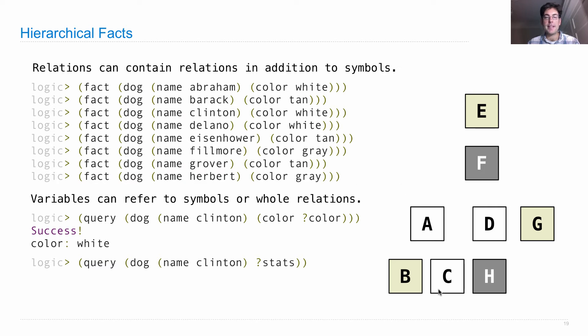So it says, yes, I know something about a Clinton. And this entire query will be satisfied as long as you bind the variable stats to the value, which is a relation itself, color white. So in this way, we can look up partial pieces of the hierarchical structure or the symbols at the leaves.